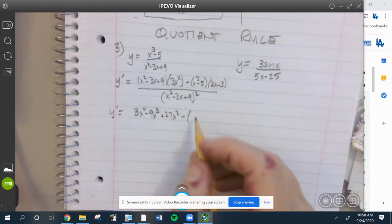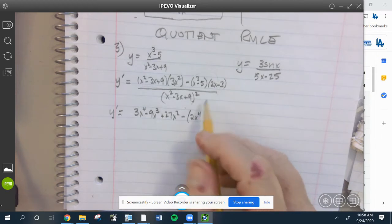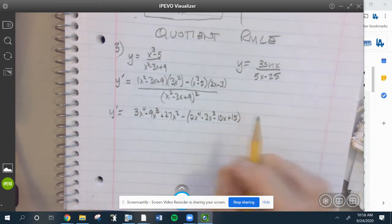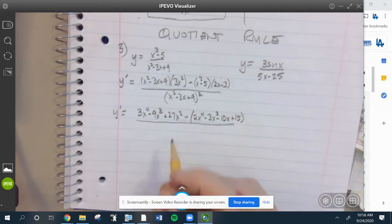So foil: 2x to the fourth first, outside is minus 3x cubed, inside minus 10x, last plus 15. Hopefully that's correct. I would just go over it one quick time just to make sure I don't miss anything.